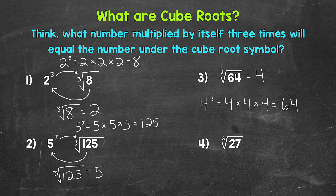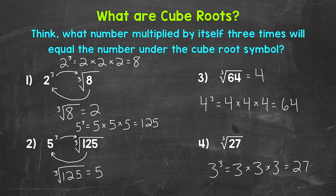Lastly, let's move on to number 4 — the cube root of 27. What cubed equals 27? 3. 3 cubed equals 27. 3 times 3 times 3: 3 times 3 equals 9, times 3 equals 27. So the cube root of 27 is 3.